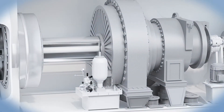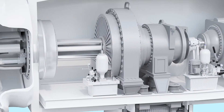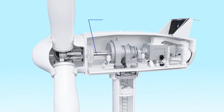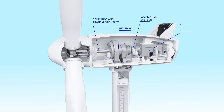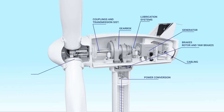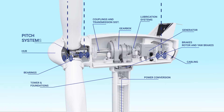A wind turbine is composed of many components, such as coupling and transmission systems, the gearbox, lubrication systems, the generator, rotor and yaw brakes, cabling, power conversion, bearings, the tower and foundation, the hub, and the pitch system.